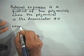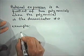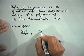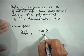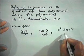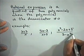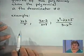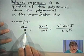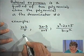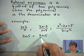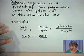Examples of rational expressions are: x plus 2 divided by x; 3x minus 2 divided by x plus 4; and x squared minus 2x plus 5 divided by 3 minus x squared. These are quotients of polynomials — one polynomial in the numerator divided by another in the denominator. Also, 2x plus 5 is a rational expression because we can express it as 2x plus 5 over 1.